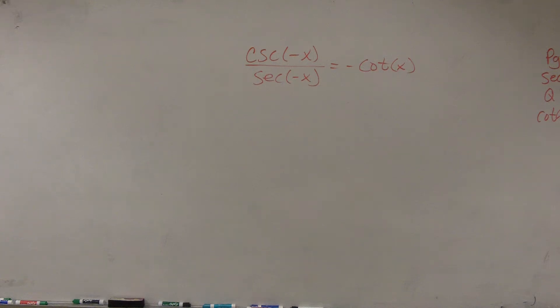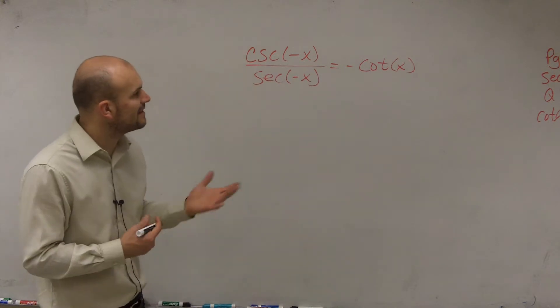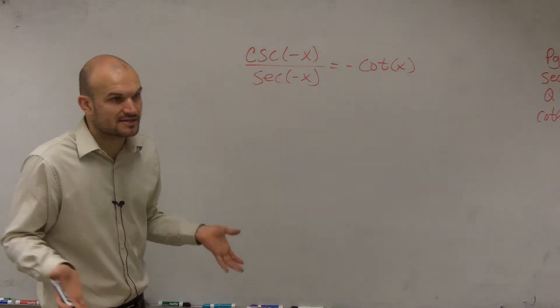All right. So when looking at this problem, I have cosecant of negative x divided by secant of negative x equals negative cotangent of x.